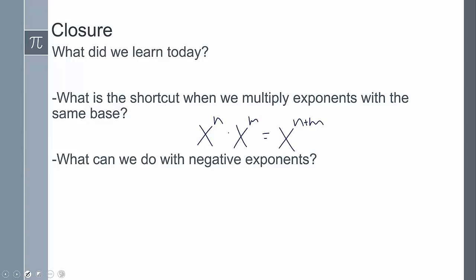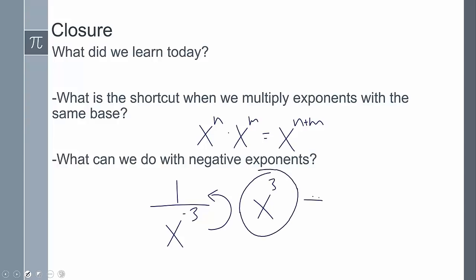With negative exponents, we can flip them over the divisor to make them positive. Remember, a negative exponent is a tool — it doesn't mean we automatically have to move it, but it's available to manipulate the expression. That concludes our lesson; if you have any other questions please leave them in the comments.